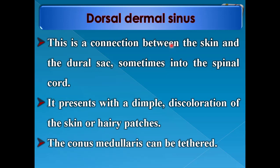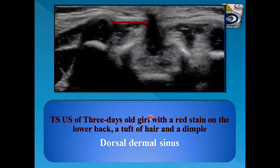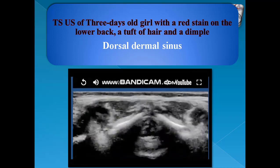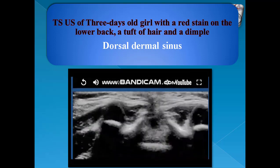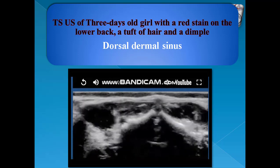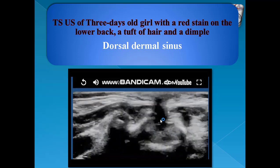Dorsal dermal sinus is a connection between the skin and the dural sac, sometimes into the spinal cord. It presents with skin discoloration or hairy patches, and the conus medullaris can be tethered. This is an example of transverse ultrasound examination of a three-day-old girl with a red stain on the lower back, a tuft of hair, and a dimple. The dorsal dermal sinus extends into the spinal canal connecting the skin to the spinal canal, denoted by the red arrow. This is clearly visible in the cine images.